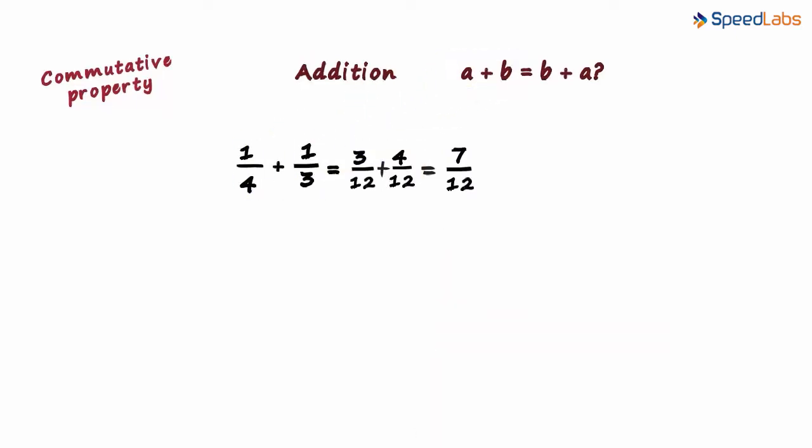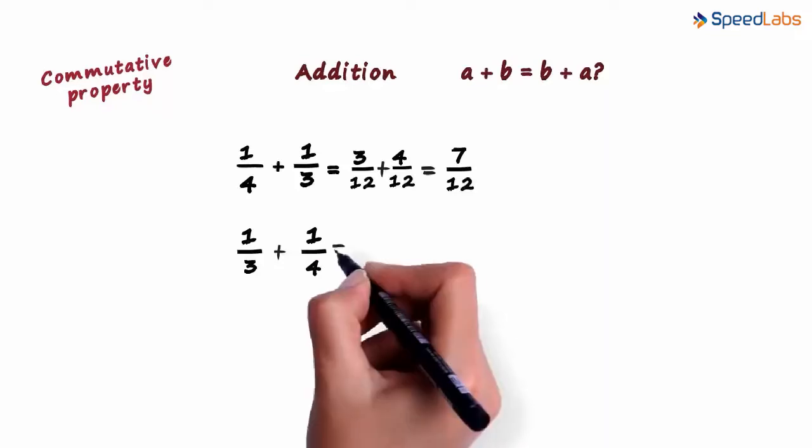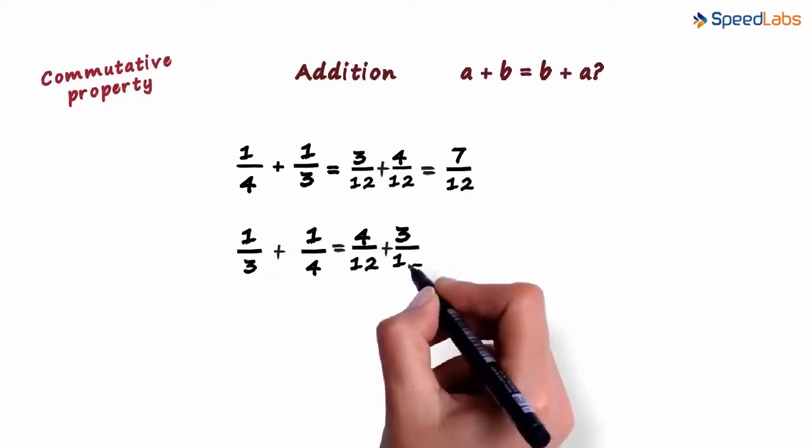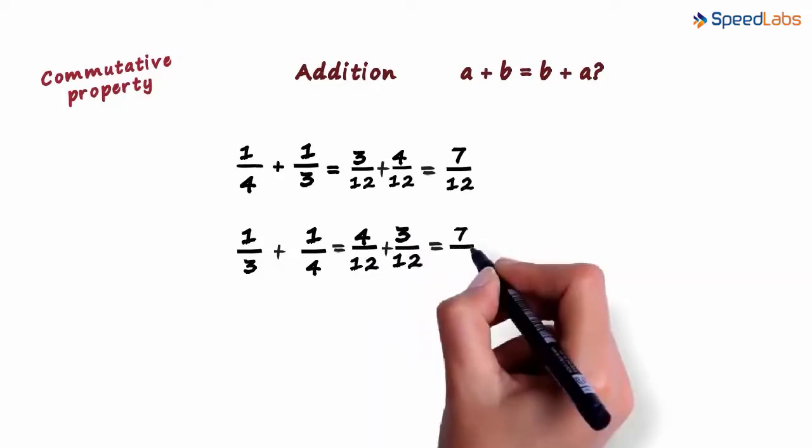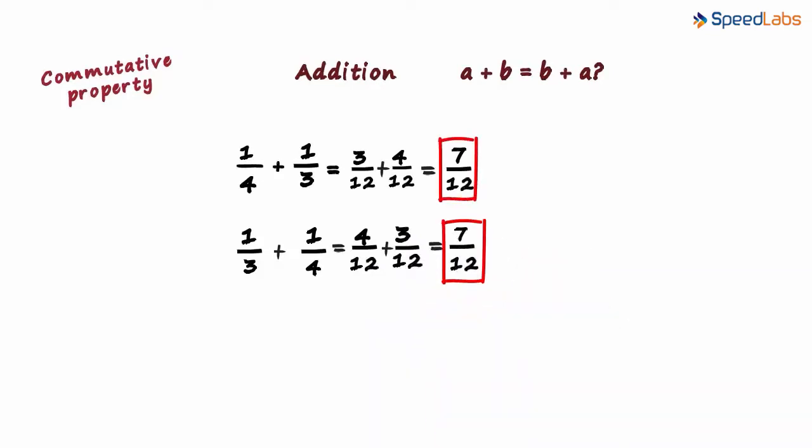Now let's change the order. Now we write 1 by 3 plus 1 by 4. Again, the LCM of the denominators is 12. Using the concept of equivalent rational numbers, we can write this as 4 by 12 plus 3 by 12, which gives us 7 by 12. In both cases, we get the same answer, 7 by 12.